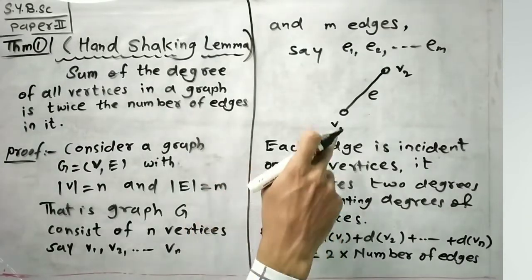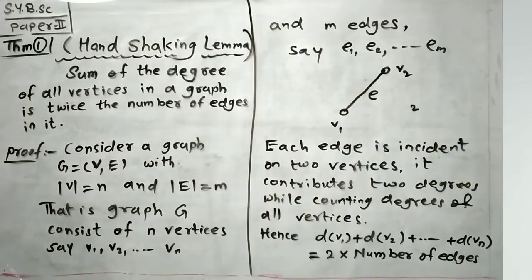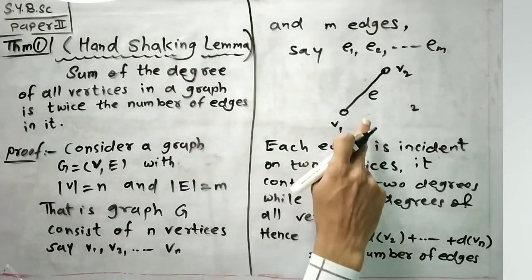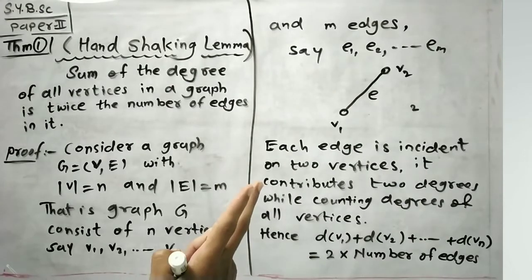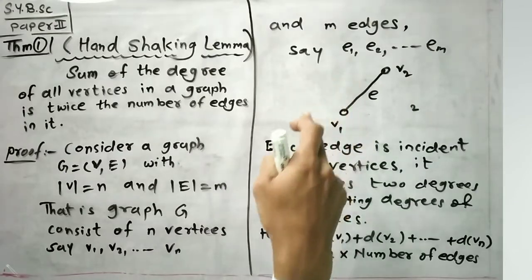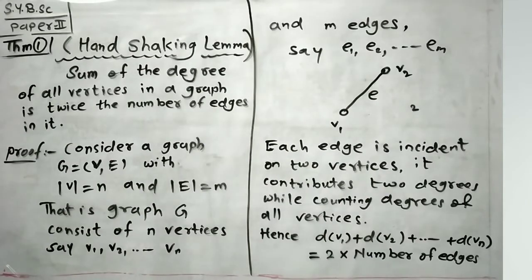Each edge is incident on 2 vertices, and that is why each edge contributes degree of 2. That is 2 into number of edges. But number of edges is m, that is 2 into m.